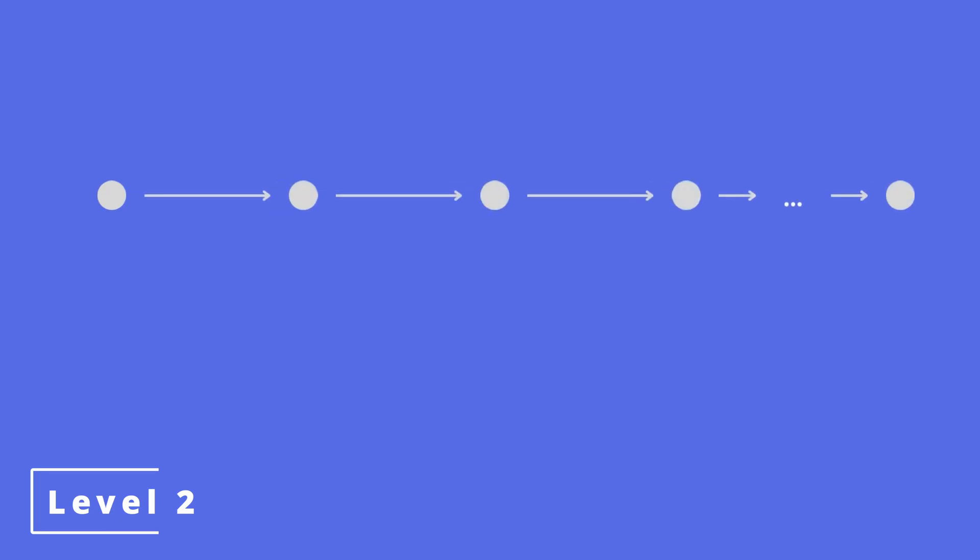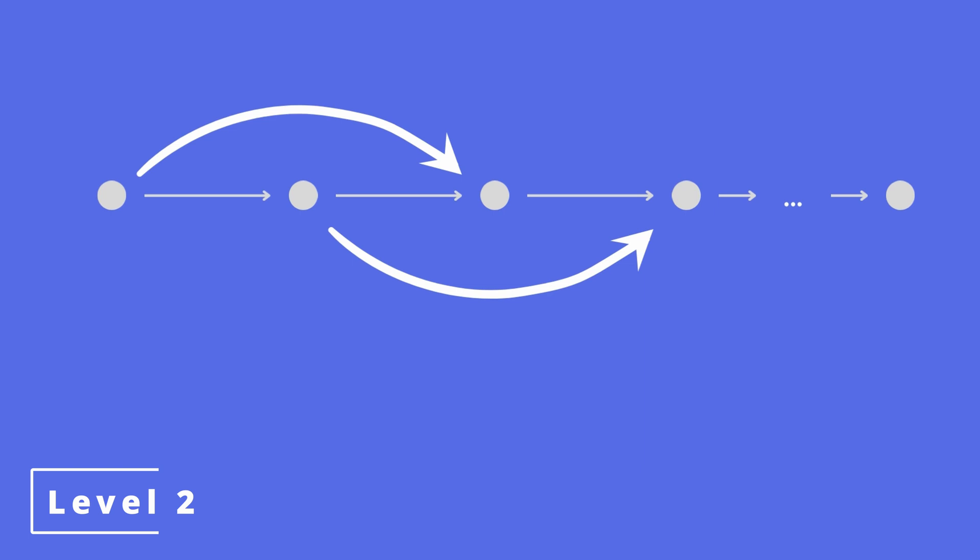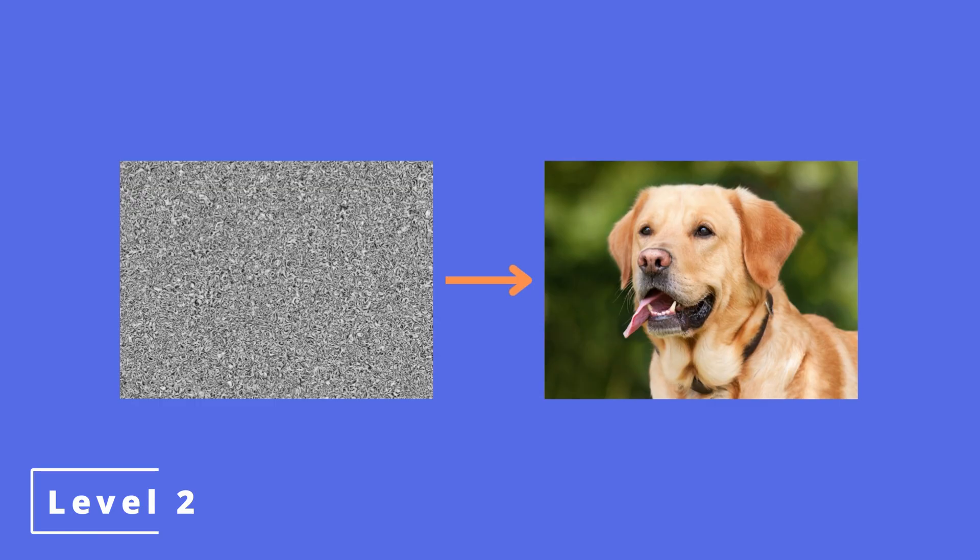Level 2. Diffusion models work by replicating this diffusion process by adding noise to original images and later learning how to reverse this noise process. The noise is applied to the images following a Markov chain. A Markov chain is a chain of events where the current time step only depends on the previous time step, meaning there are no cross dependencies between time steps that do not immediately follow each other. This assumption of Markov chains makes it tractable for the noise adding to be reversed later.